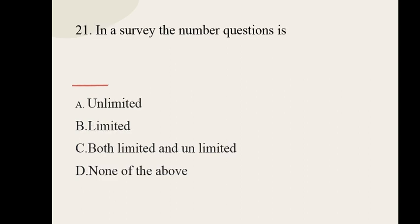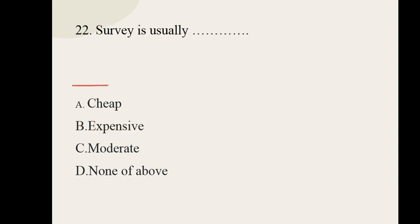Question number twenty-one: in a survey the number of questions is dash. Options: unlimited, limited, both limited and unlimited, none of the above. The correct option is limited. Question number twenty-two: survey is usually dash. Options: cheap, expensive, moderate, none of the above. The correct option is expensive.